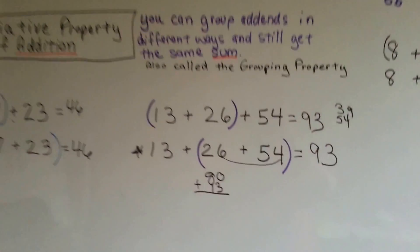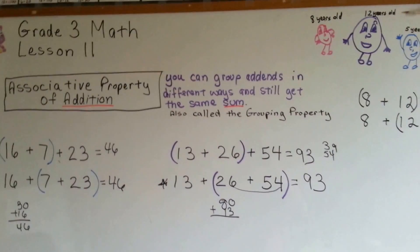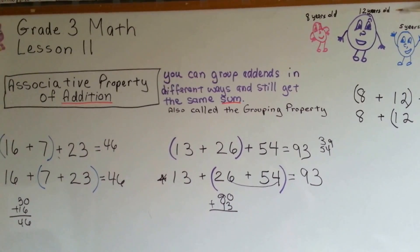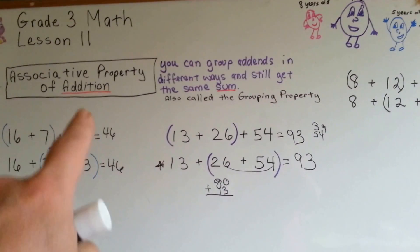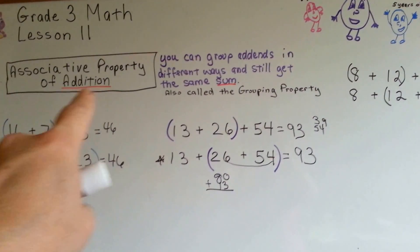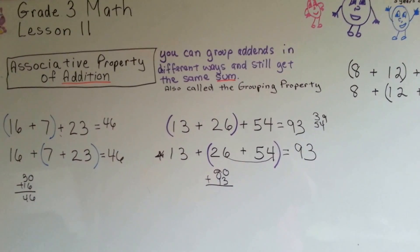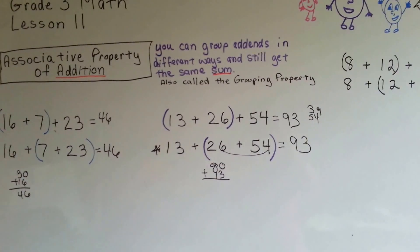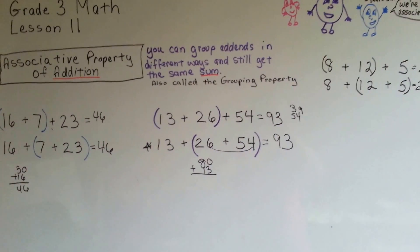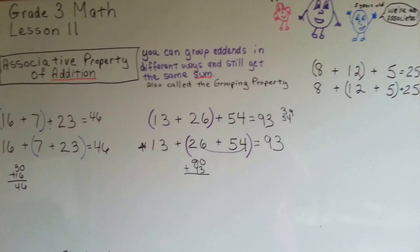That's the associative property. So now we've done identity property, commutative property, and associative property. Now if you notice, I underlined addition, because there is an associative property of multiplication and others. So, this is addition. See you next video.